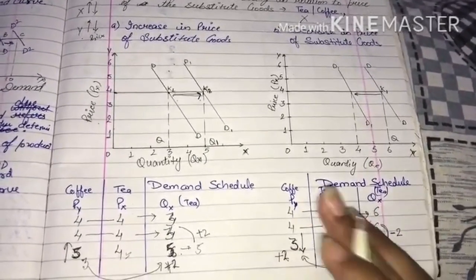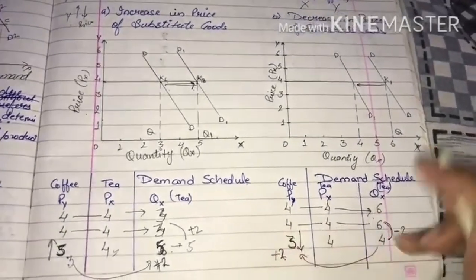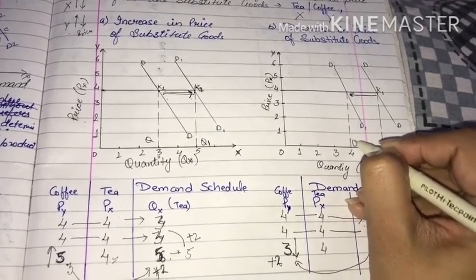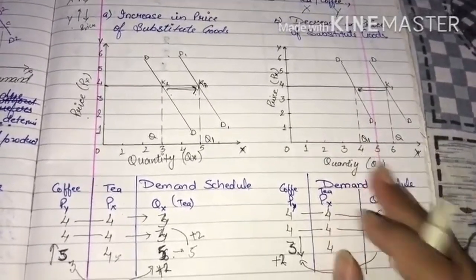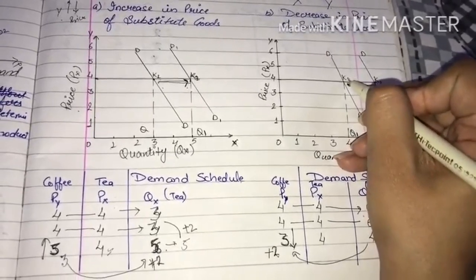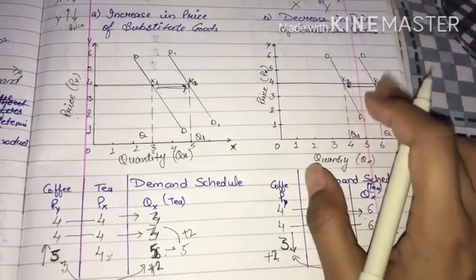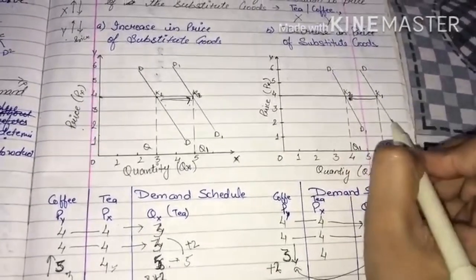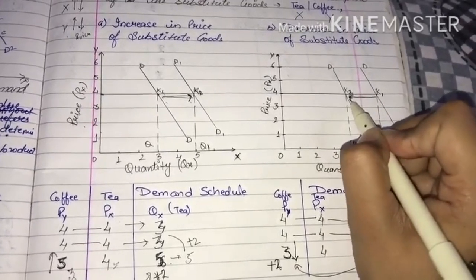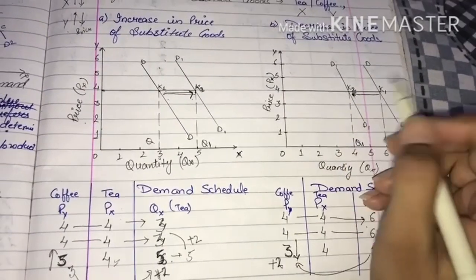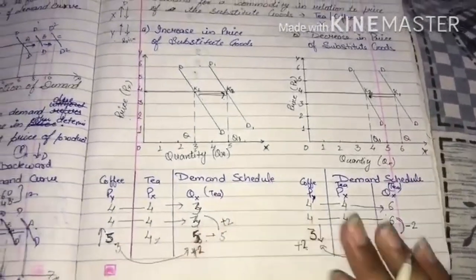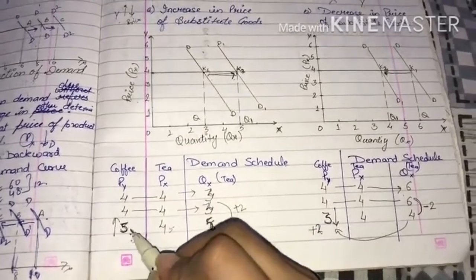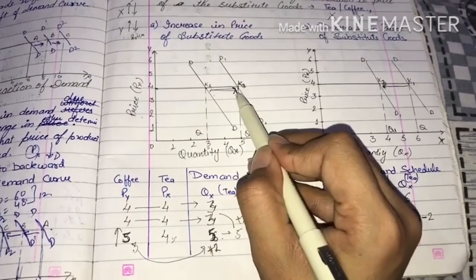These two consumers will move to coffee and start demanding coffee instead of tea. My demand curve will shift from DD to D1 D1, which is a leftward shift or decrease in demand curve. Left side shift or decrease in demand curve is the same thing.